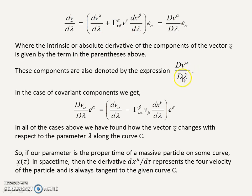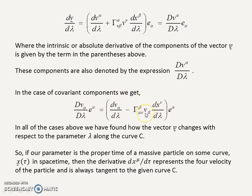The notation for this is capital D V^α over capital D lambda. In the case of covariant components, or the dual vector components, we have a corresponding expression. In all cases, we have found how the vector V changes with respect to the parameter along the curve C.